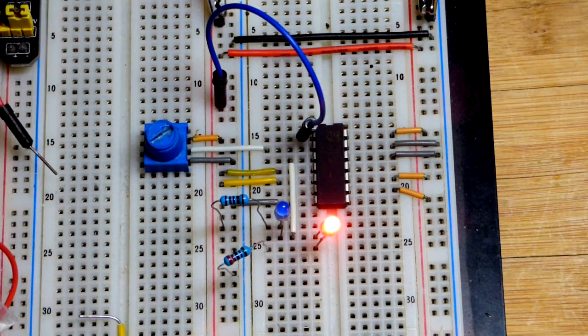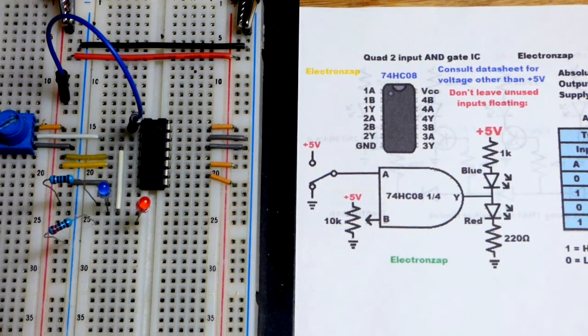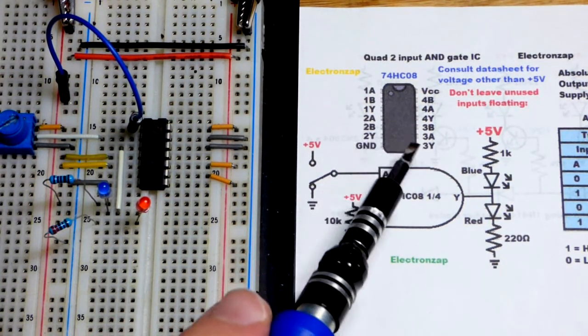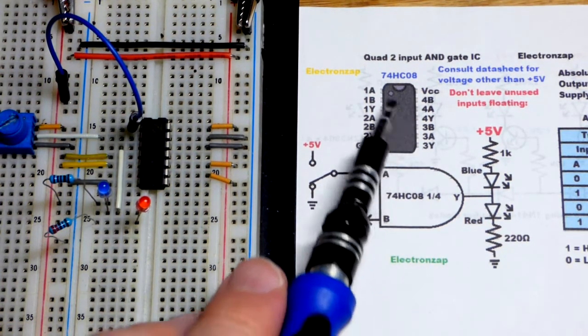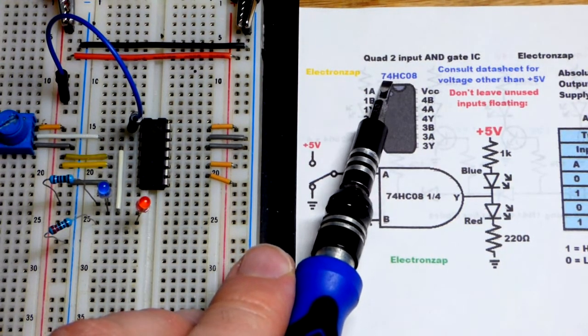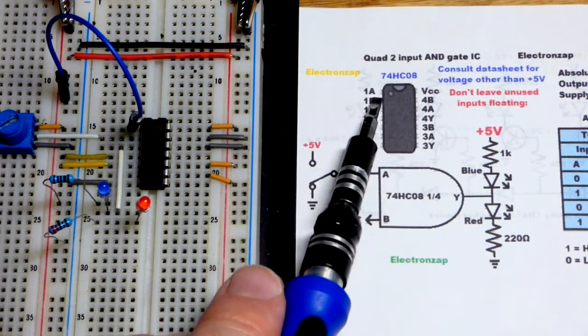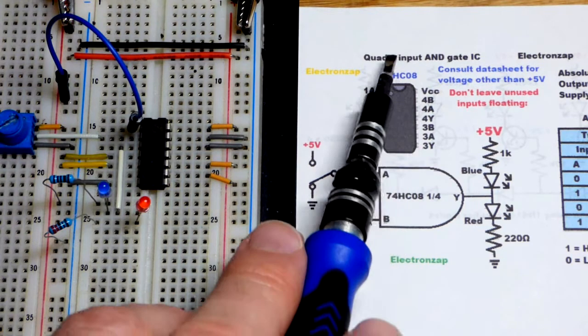Here is the diagram for this video. When you look at the data sheet you always want to look at the data sheet for these components, these integrated circuits. This is the 74HC08, it's a quad, there's four of them as I mentioned before, two inputs so A and B. Some have more inputs in AND logic gate integrated circuits.